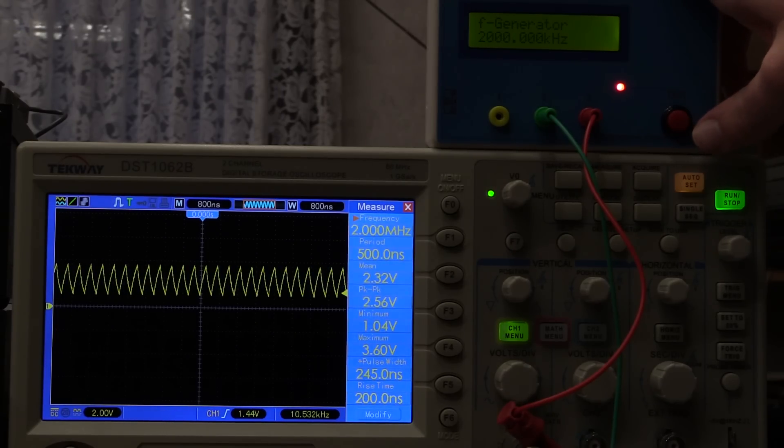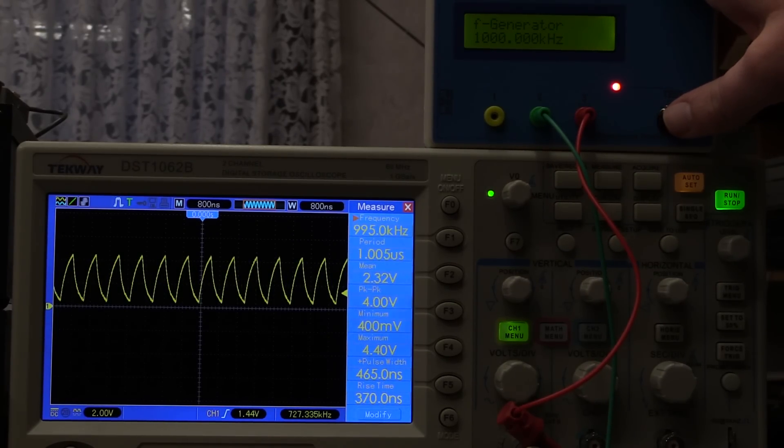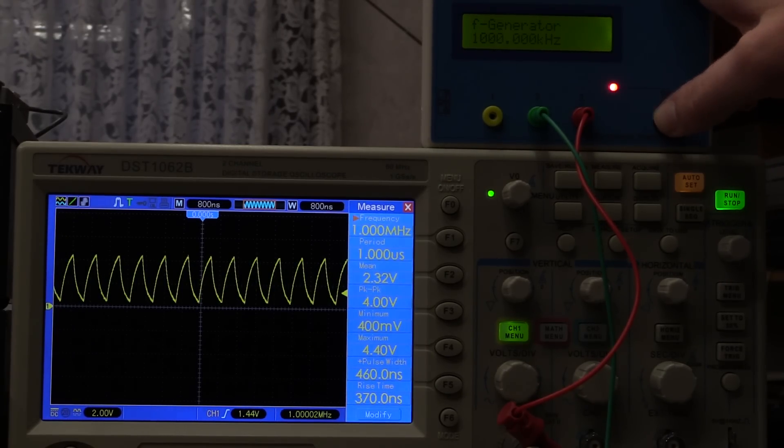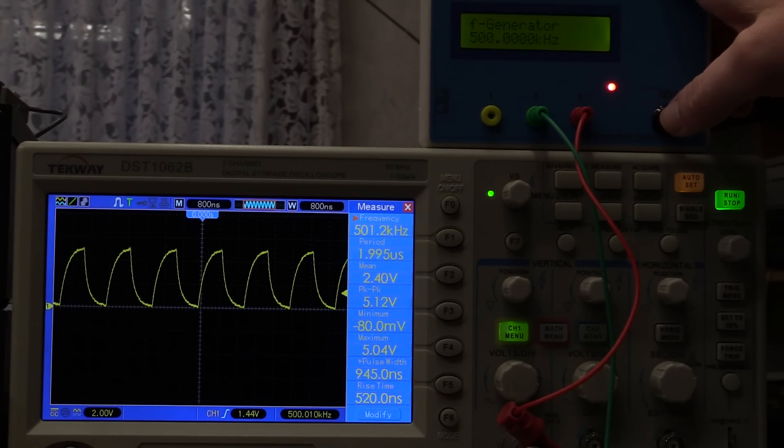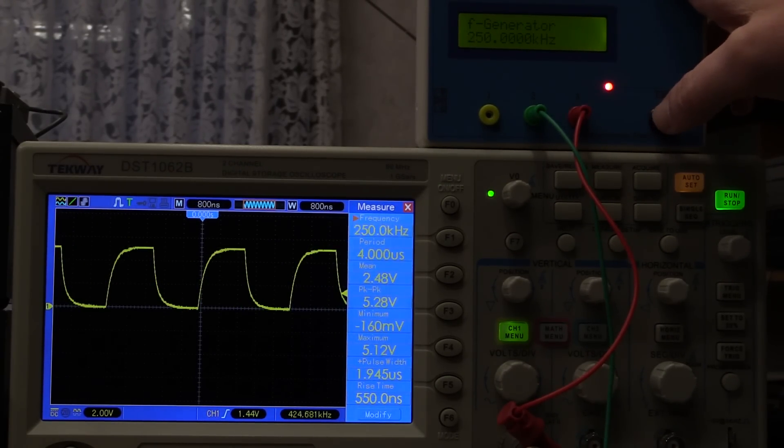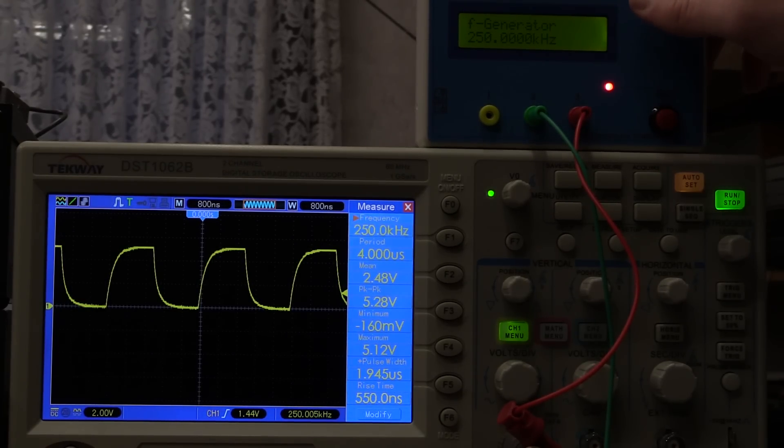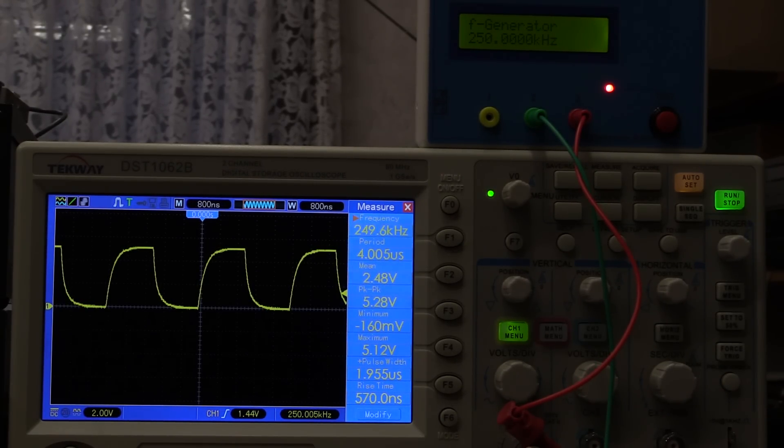However as we push our test button you can see we can go down to 1 megahertz, push it again we go down to 500 kilohertz again 250 and yep it is starting to look more and more like a positive impulse square wave. We're getting peak to peak of around about 5 volts. So that is a good old TTL level.